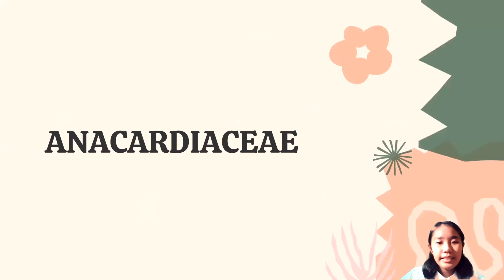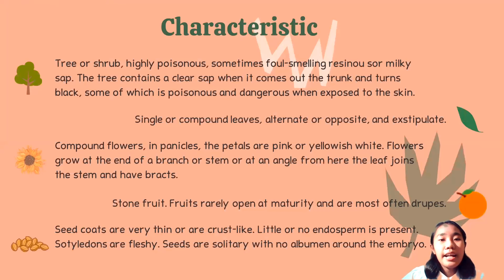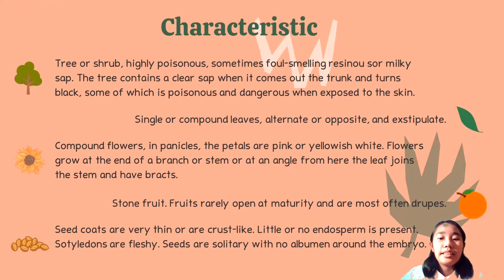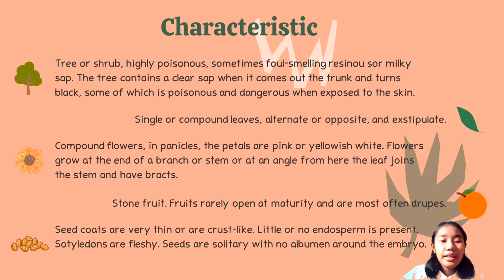The third family is Anacardiaceae. The characteristic of the Anacardiaceae family is tree or shrub with resin canals, highly poisonous, sometimes foul-smelling resin in the bark, milky in shape. The tree contains a clear sap that when it seeps out the trunk turns black. Some of these are poisonous and dangerous when exposed to the skin. The leaves are single or compound, alternate or opposite, and exstipulate. The flowers are compound in panicles. The petals are pink or yellowish-white. Flowers grow at the end of a branch or stem, or at axils where the leaves join the stem. The fruits are stone fruits, rarely opening at maturity, and are most often drupes. The seed coats are very thin or are crustaceous. Little or no endosperm is present. Cotyledons are fleshy. Seeds are solitary with no albumen around the embryo.